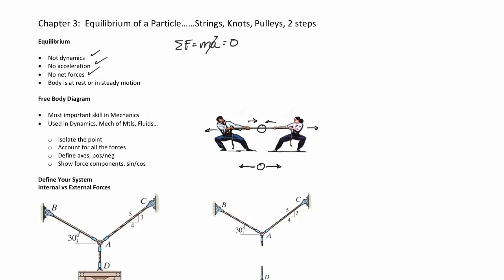To answer which way the force is going, it depends on your perspective — that's what we call defining your system. You have to carefully define your system and figure out what it means for a force to go in a particular direction, whether it's positive or negative. What we're going to do is isolate the point or system we care about, account for all the forces, define axes, and determine positive and negative directions. I'll encourage you to show the sine and cosine components when dealing with angles.